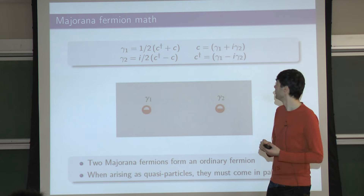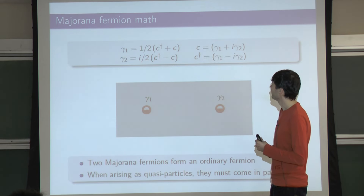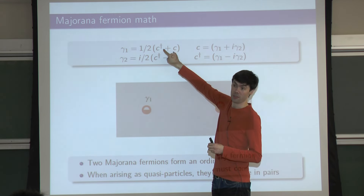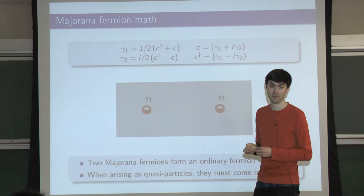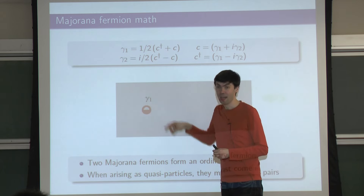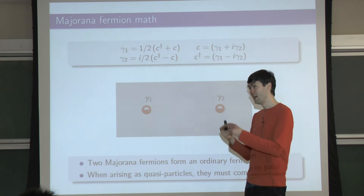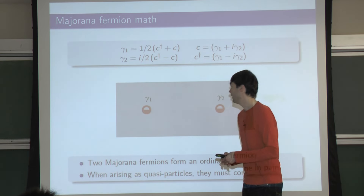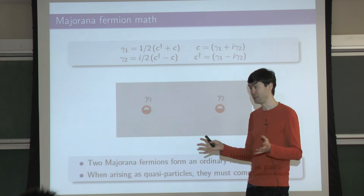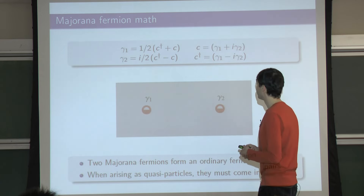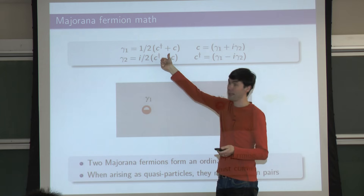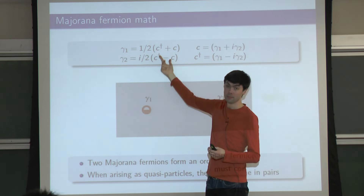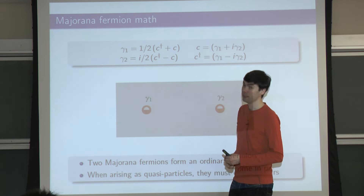You can extract the Majorana operators and see that they represent equal superpositions of creation and annihilation of real fermions. That's why in the cartoon they are depicted by half-filled or half-empty circles - they are particles that are equal superpositions of creation and annihilation. In solid state, they are an equal superposition of an electron and a hole. If you take the complex conjugate of gamma_1 or gamma_2, you get the same operator back - they are self-conjugate.